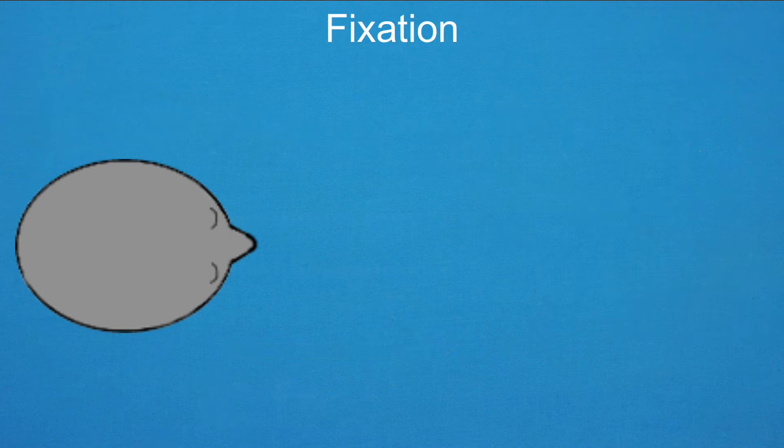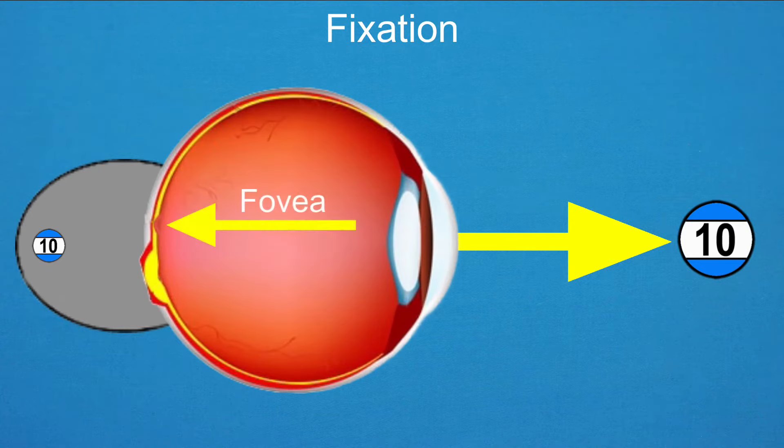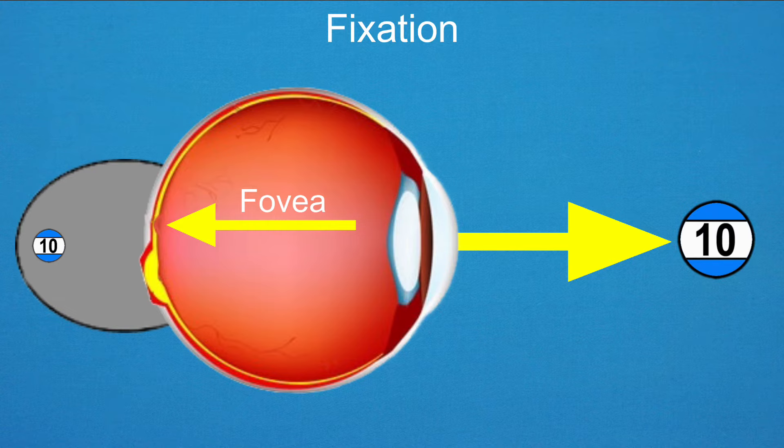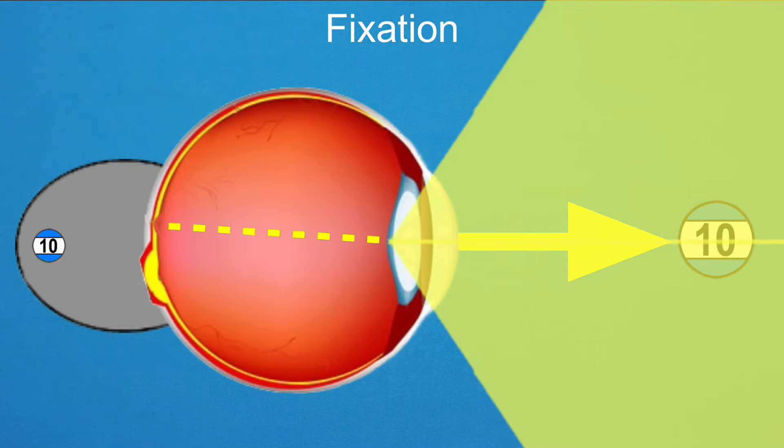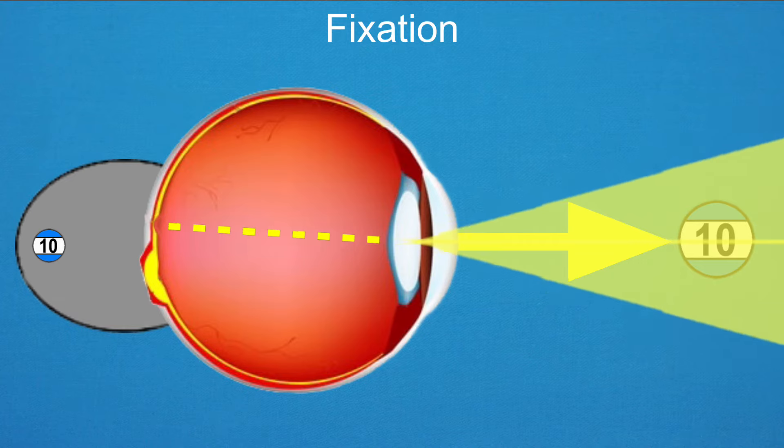Fixation, the ability to fix your gaze on an object, is a complicated process made possible by the eye's fovea, a central pit of closely packed cones in the center of the eye. The sharpest, most detailed area of your vision is the central fixation area of the fovea, accounting for 5 to 8 degrees of your field of view.